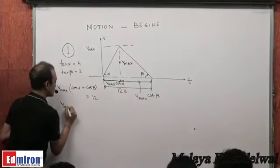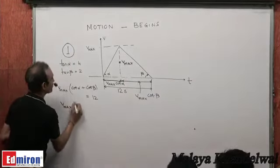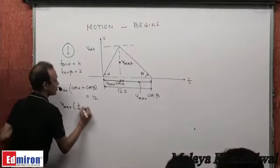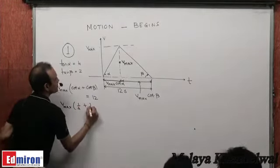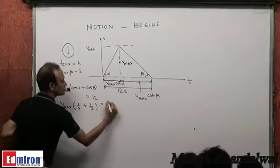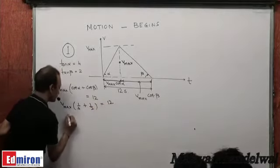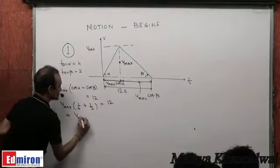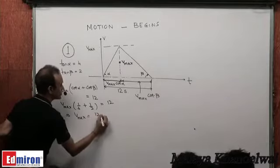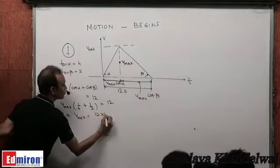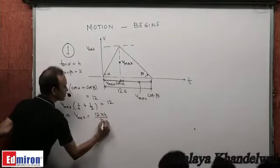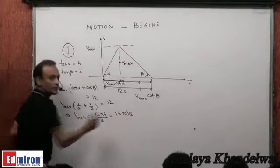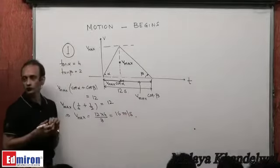So Vmax·(cot α + cot β) = 12. cot α is 1/4, cot β is 1/2, so Vmax·(1/4 + 1/2) = 12. That's Vmax·(3/4) = 12, so Vmax = 12 × 4/3 = 16 meters per second.